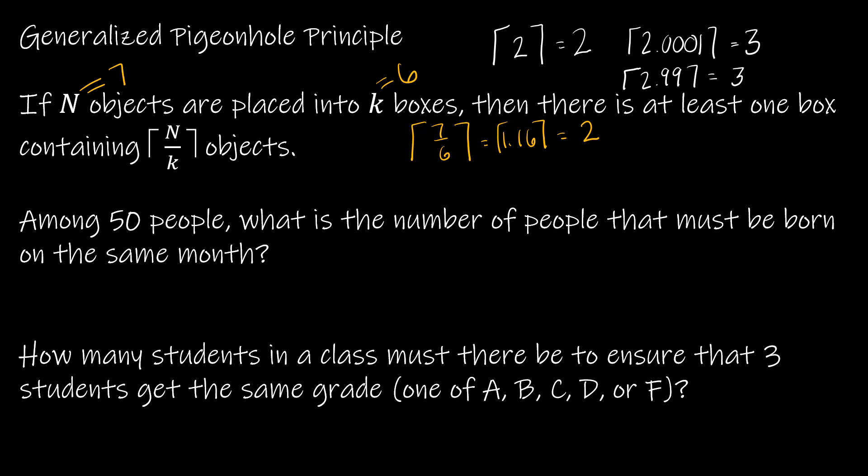Let's take a look at a very straightforward application. If we have 50 people, what's the number of people that must be born on the same month? 50 people would be 50 objects, that's n, and the number of people that must be born on the same month, that's the number of boxes, so k is 12. So really we're just saying let's take 50 divided by 12, which gives us 4.16 repeating, and using the ceiling function we round that to 5.